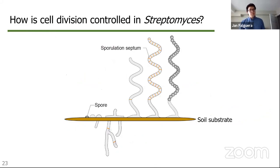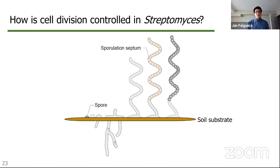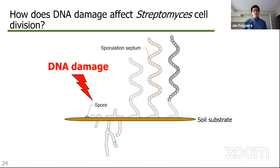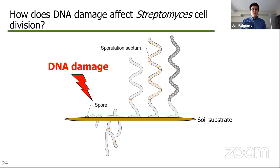Because of Streptomyces' different life cycle, we can study some really interesting cell biology regarding how they manage and control morphological development. In comparison to the question I posed at the start — how is cell division controlled — that can now be refined to asking how cell division is controlled in Streptomyces. And as I showed you earlier, if you induce DNA damage in a bacterium you can find ways that cell division is regulated. So the ultimate guiding question of my project becomes: how does DNA damage affect Streptomyces cell division?